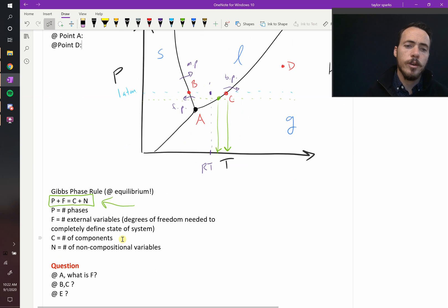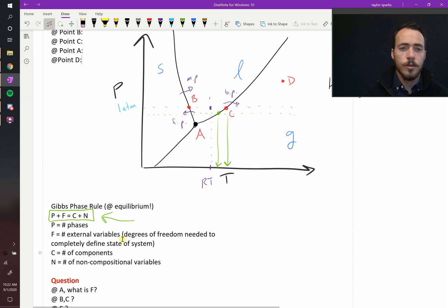And then N is your number of non-compositional variables. So things that you can change that aren't composition. So for example, in here you've got pressure and temperature. We would have two, two non-compositional variables.